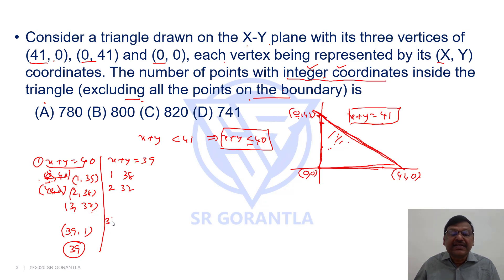What is the maximum value for x? x can be 38, y can be 1, and we need to take only integer coordinates. So then how many possibilities are there? If you see, there are 38 coordinates you can get.